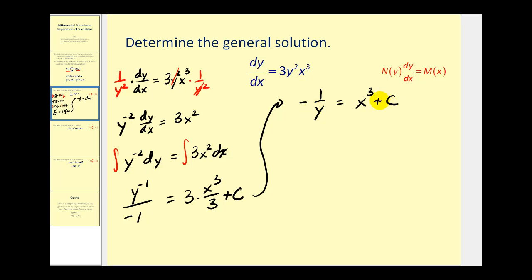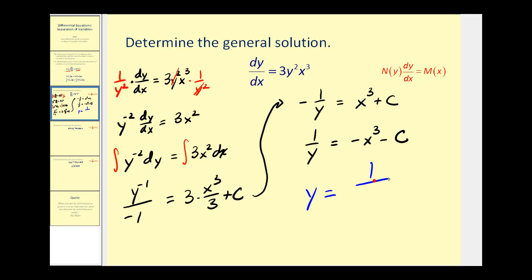Multiplying through by negative one, we'd have one over y equals negative x cubed minus c. Now we want to solve this for y: if one over y equals negative x cubed plus c, the reciprocals must also be equal, so y equals one over negative x cubed minus c. This is the general solution to the given differential equation.